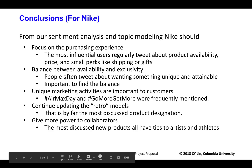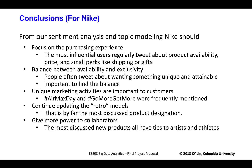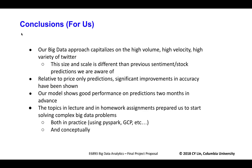For our conclusions, we can give some recommendations for Nike. It's better for them to focus on the purchasing experience, so that's the most influential users. Regular tweets about product availability, price, shipping, and gifts are important. It's also important to keep the balance between availability and exclusivity. For our own conclusions, our big data approach focused on high volume, high velocity, and the amount of data. Topics from lectures and homework assignments prepared us to start solving complex big data problems, and we applied them through PySpark, GCP, and Python.